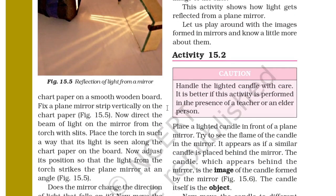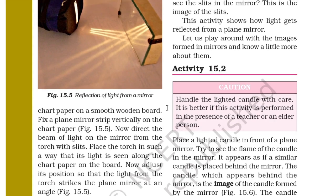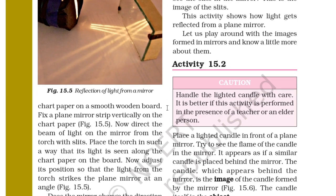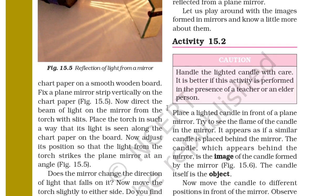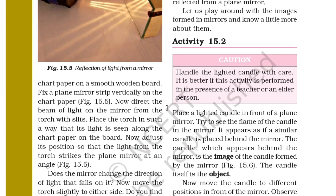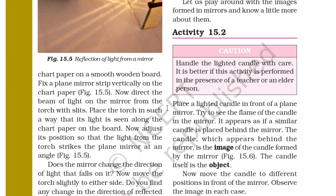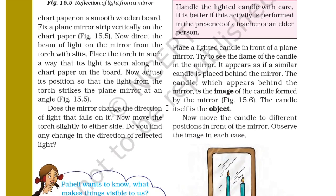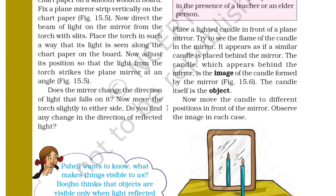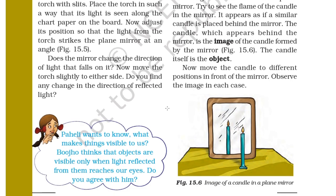Spread a sheet of chart paper on a smooth wooden board. Fix a plain mirror strip vertically on the chart paper, as shown in figure 15.6. Place the torch so that its light is seen along the chart paper on the board. Adjust its position so that the light from the torch strikes the plain mirror at an angle. Does the mirror change the direction of light? Now move the torch slightly to either side — do you find any change in the direction of the reflected light?